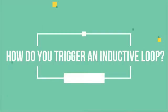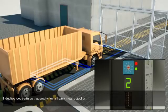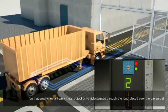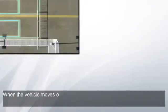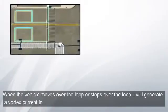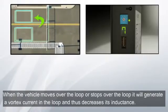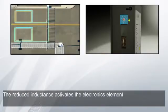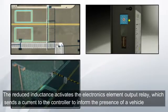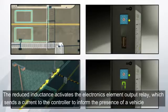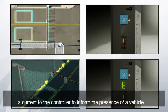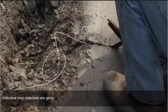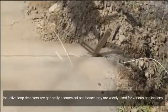How do you trigger an inductive loop? Inductive loops can be triggered when a metallic object or vehicle passes through the loop placed over the pavement. When the vehicle moves over or stops over the loop, it generates a vortex current in the loop, which decreases its inductance. The reduced inductance activates the electronics element output relay, which sends a current to the controller to inform of the presence of a vehicle.